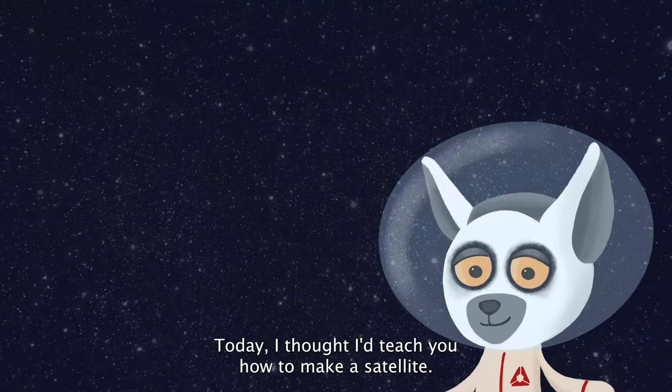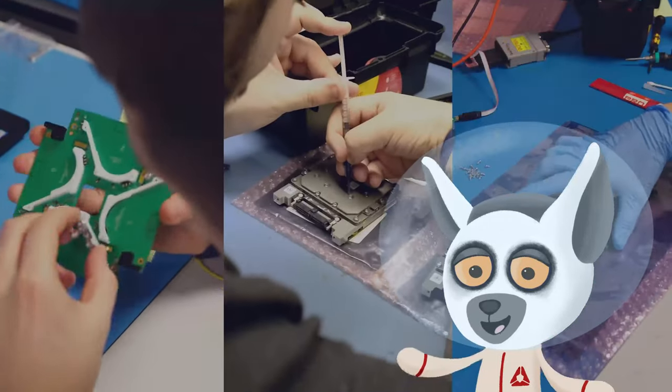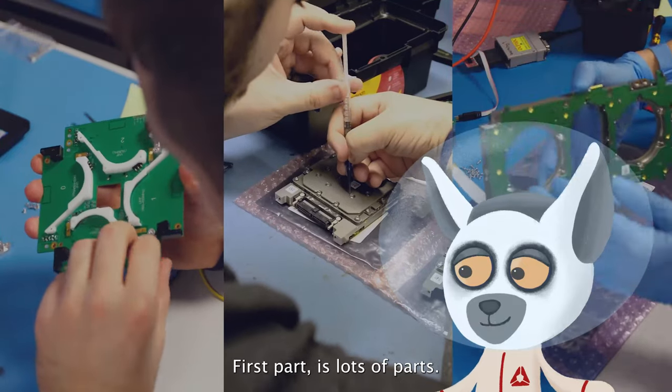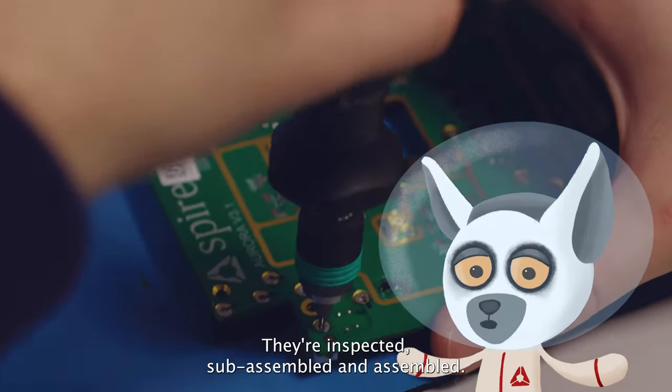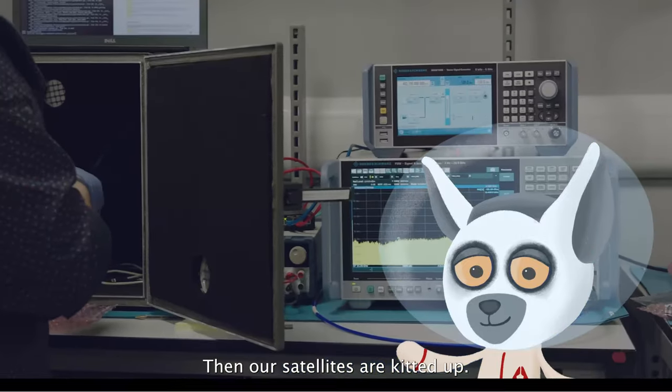Today I thought I'd teach you how to make a satellite. The first part is lots of parts. They're inspected, sub-assembled and assembled. Then our satellites are kitted up.